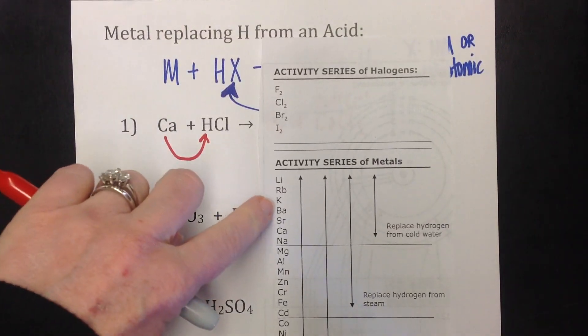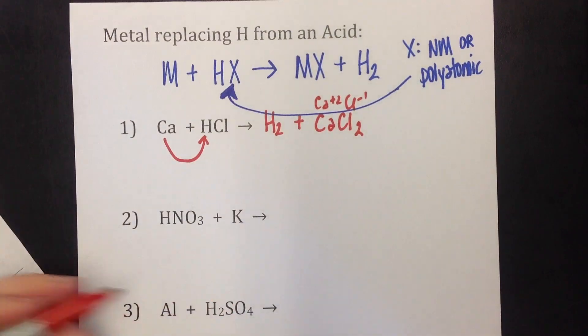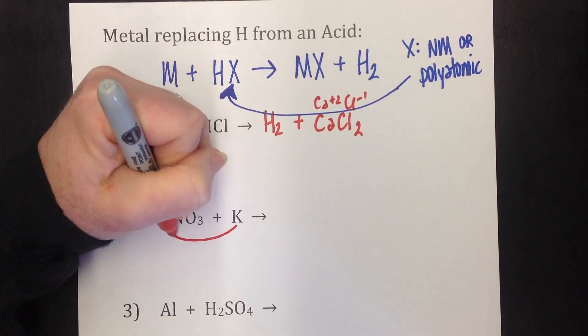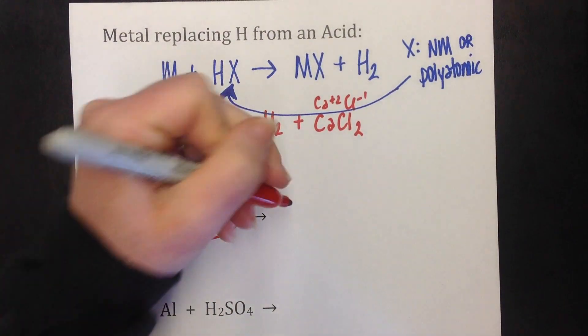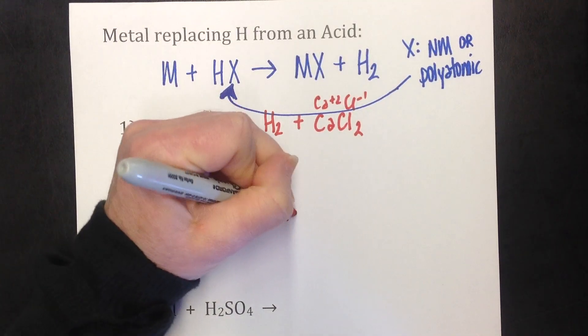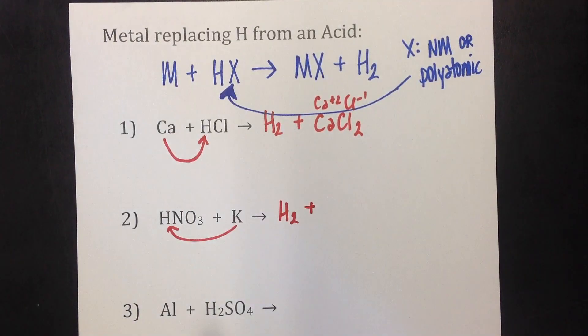And yes, potassium does fall in that group. So potassium is kicking the hydrogen out. That leaves hydrogen gas all by itself. And now potassium wants to hook up with nitrate.